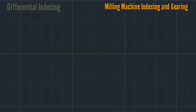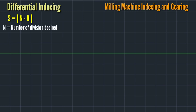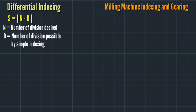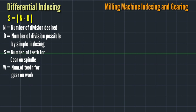For differential indexing, we'll use the formula S equals N minus D. N is the number of divisions desired, D is the number of divisions possible by simple indexing. S is the number of teeth for gear on spindle, W is the number of teeth for gear on work.